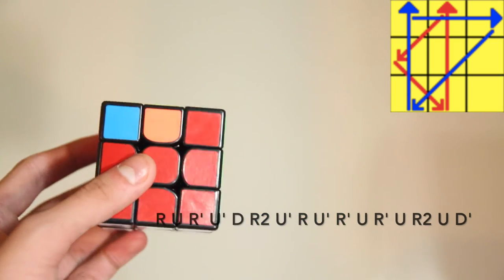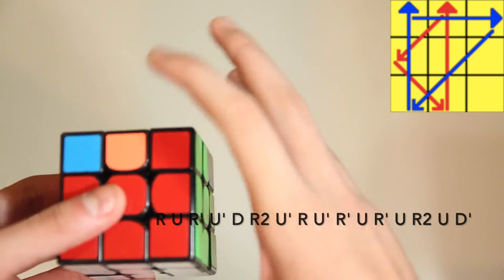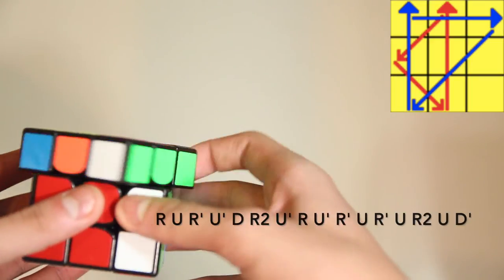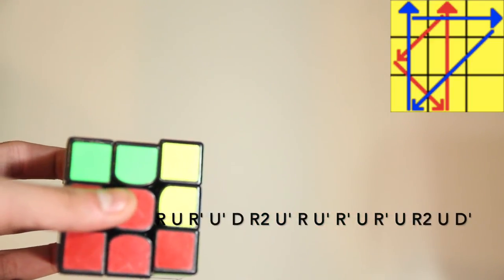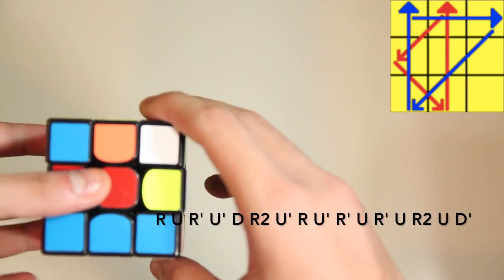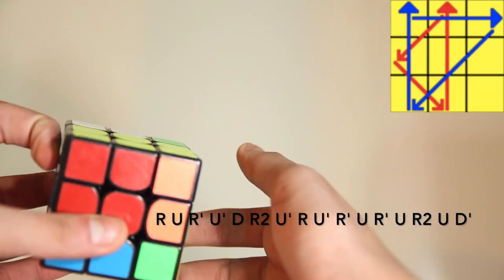So this is very similar to the G B-perm. It's just mirrored. So we start it off like R U R' and then U and D at the same time with your left hand like this. And then R2 like that. Don't re-grip.